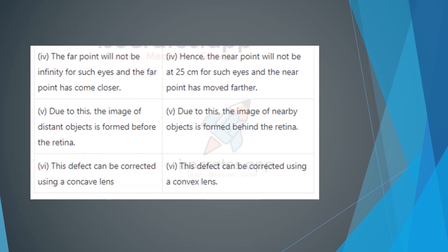The fourth difference: in myopia, the far point will not be infinite — the far point has come closer. In case of hypermetropia, the near point will not be 25 centimeters — the near point has moved farther.